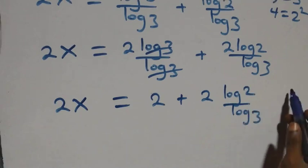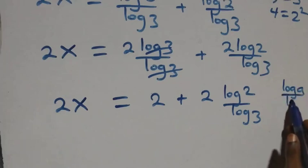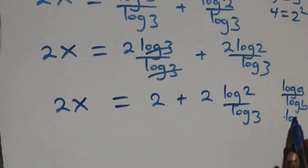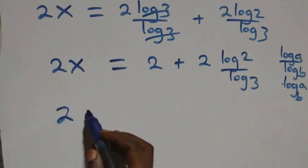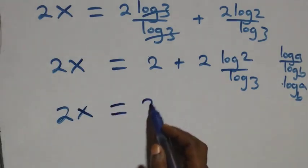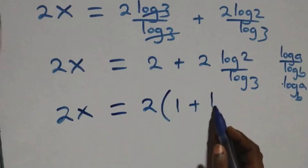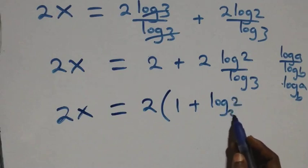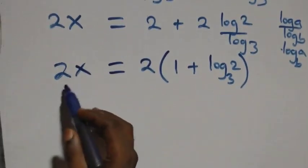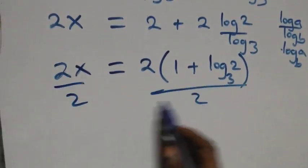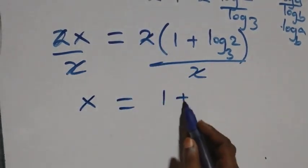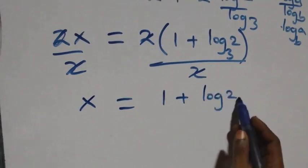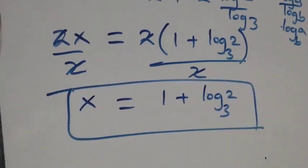Then we apply the change of base rule, where log a over log b can be written as log a to base b. So 2x equals 2 plus 2 log 2 base 3. Since 2 is common, we factor it: 2x equals 2 times the quantity 1 plus log 2 base 3. We then divide both sides by 2, and we are left with x equals 1 plus log 2 base 3.